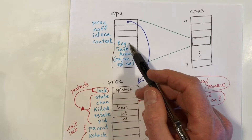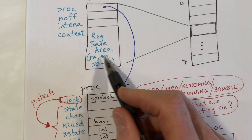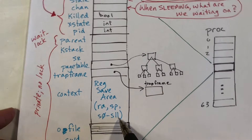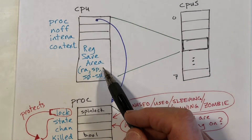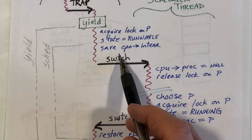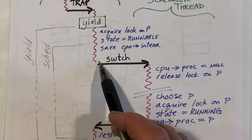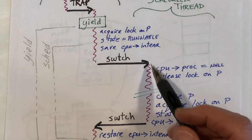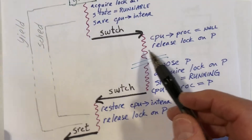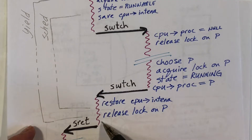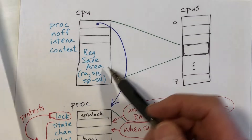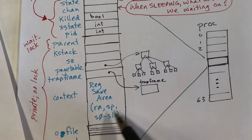In the CPU structure, we have a register save area where we can save registers RA, SP, and the S registers. And also in the proc structure, we have a register save area where we can save those same registers. When we switch from process P, we save its current registers into the proc structure's register save area and load the registers from the CPU struct's register save area. And when we go back from the scheduler thread to process P, we save the scheduler's registers in the CPU struct and load the registers from process P's register save area.